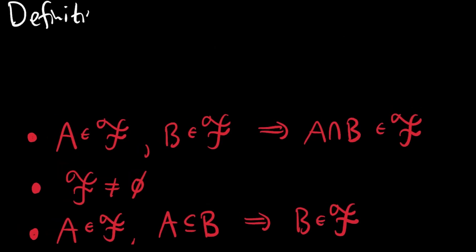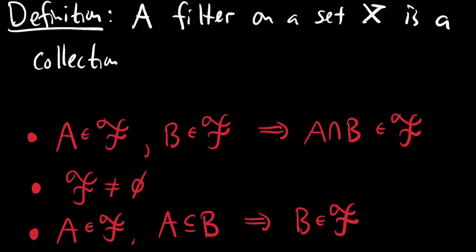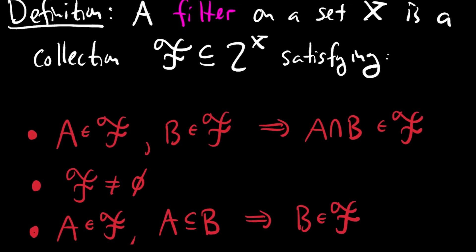And conversely, namely, if you have a collection of sets that is downward directed, meaning it's closed under intersection, it's a non-empty collection, and it's upward closed, then it corresponds to a meet-lattice homomorphism from the power set of X into {0,1}. We have terminology for such a collection of sets. And my notation script F was suggestive. A collection of sets satisfying these three properties is called a filter.